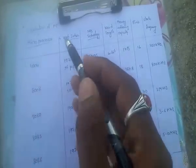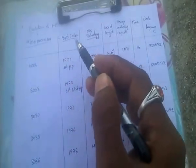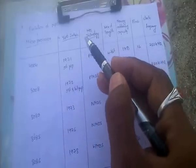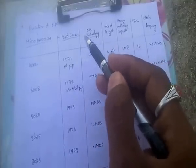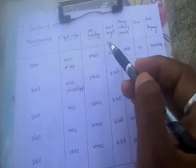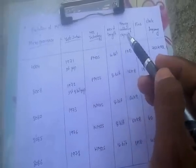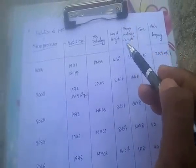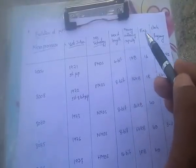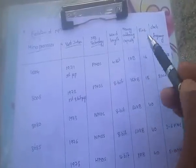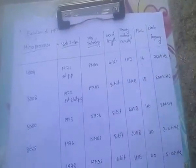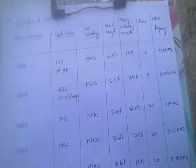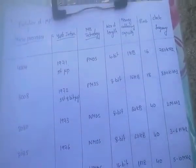Here is the table: microprocessor name, year of introduction, MOS technology, word length, memory addressing capacity, number of pins used, and clock frequency of the microprocessor.